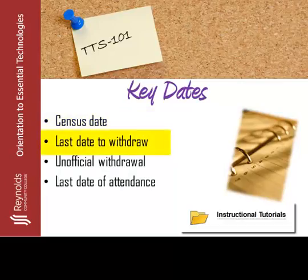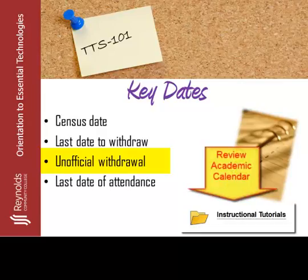Last Day to Withdraw: After the period in which a student can receive a refund, there is still time to decide if withdrawing is the correct action for the student. In this case, a student may initiate the withdrawal process. Unofficial Withdraw: Should a student discontinue attending or participating in class for two to three consecutive weeks, an instructor has the right to remove the student from the course. This is connected to the second attendance certification, which is the Stopped Attending certification, and a student's last date of attendance will be required.